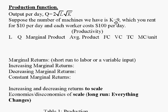We're going to suppose this is our production function and that the number of machines we have right now is 9, so K equals 9, and we can't change that now. Let's suppose that we rent these machines for $10 per day and each worker costs $100 per day to keep the numbers simple.